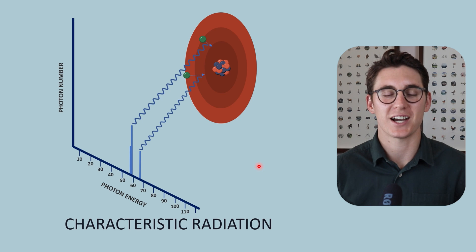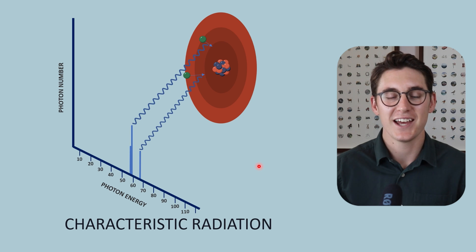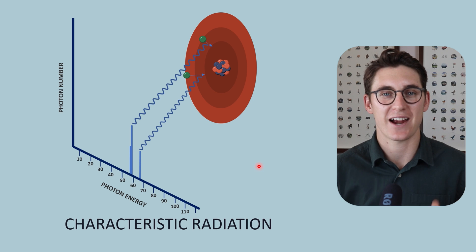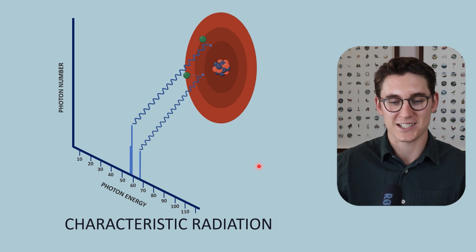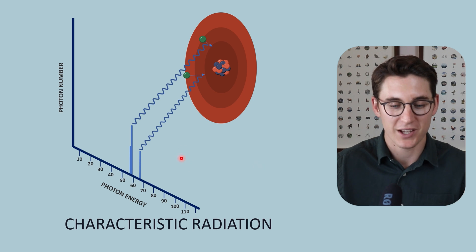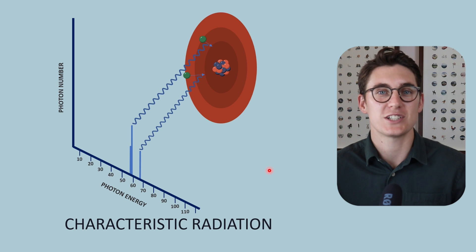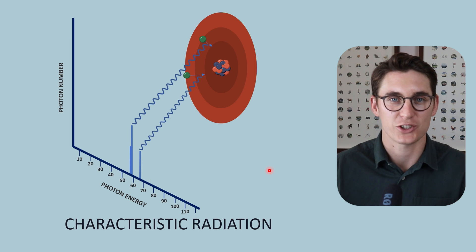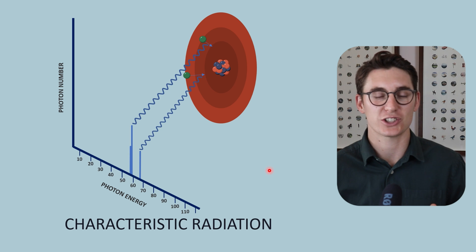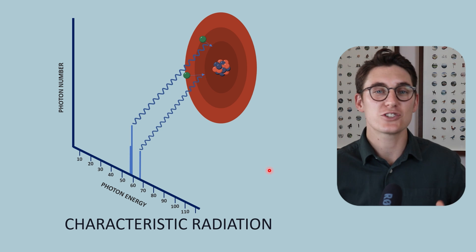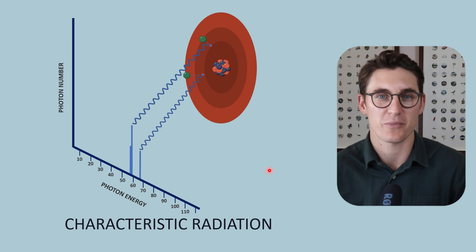In our previous talk we looked at the production of Bremsstrahlung radiation. Now let's shift our attention to characteristic radiation. The characteristic radiation spectrum looks vastly different from the Bremsstrahlung radiation spectrum. If you haven't watched that Bremsstrahlung radiation talk, please go and watch that one first, as this talk follows on from that one.